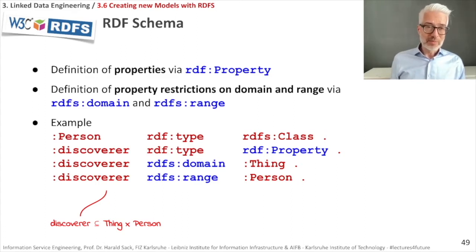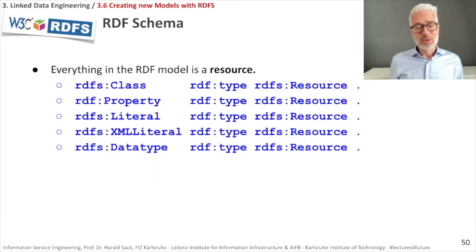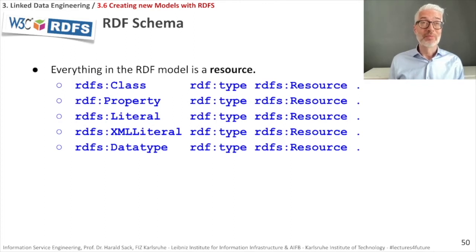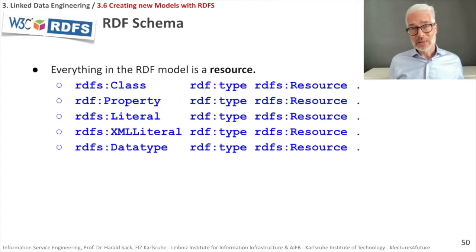What else can we say about RDF schema? There is not very much vocabulary. Everything in RDF is a resource, so there is something called rdfs:Resource, which is the upper class of everything. This means rdfs:Class is a resource, rdf:Property is a resource, rdfs:Literal is also something you can define here, and that's a resource. You can define an XML literal — a literal with an XML schema data type — and you can define a data type. Basically, we only need to define what is a class, what is a property, and what are domain and range restrictions for properties.